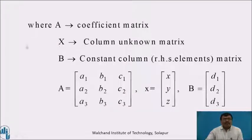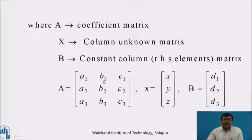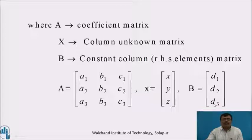Where A is the coefficient matrix, x is the column unknown matrix, and b is the constant matrix. A equals [a1, b1, c1; a2, b2, c2; a3, b3, c3], x is the column unknown matrix [x, y, z], and b equals [d1, d2, d3].